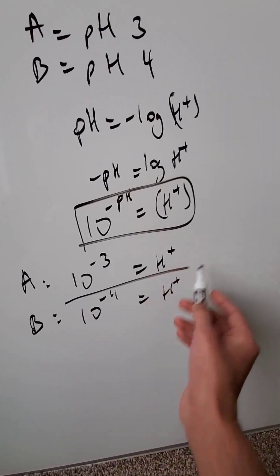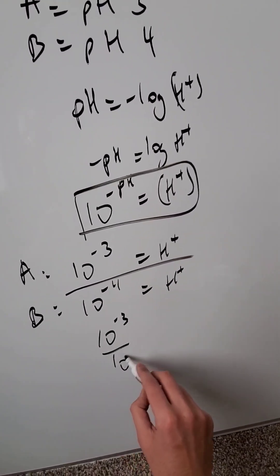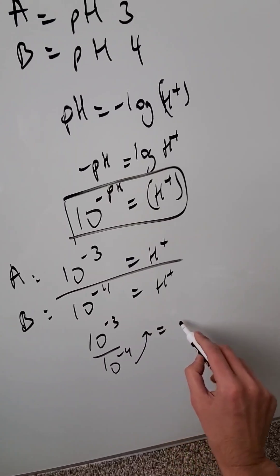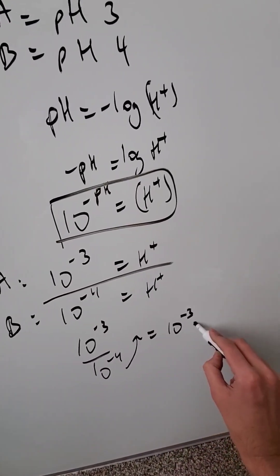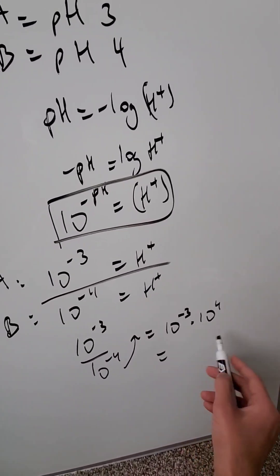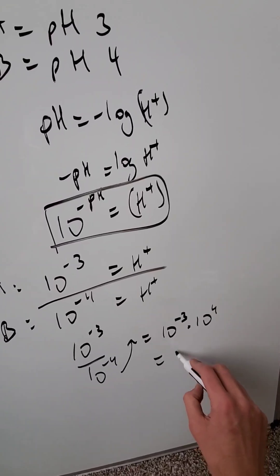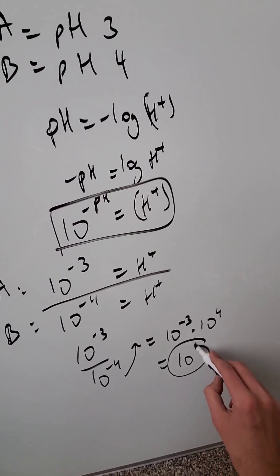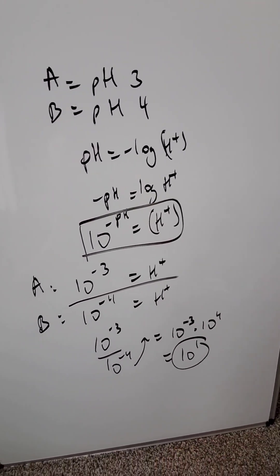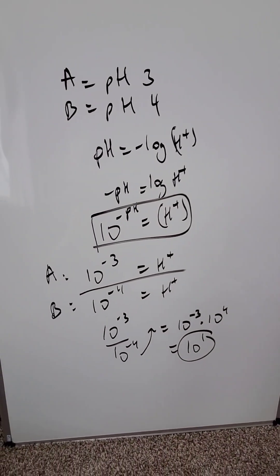All you have to do is do a ratio or divide. 10 to the power of minus 3 divided by 10 to the power of minus 4 pushes up using laws of exponents: 10 to the minus 3 times 10 to the power of 4. The ratio of A to B in terms of hydrogen ion concentration is 10 to the power of 1, which is just 10. It's 10 times more concentrated in terms of hydrogen ions. We're done.